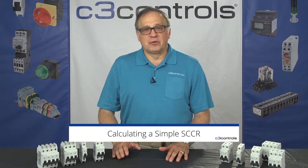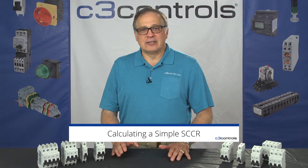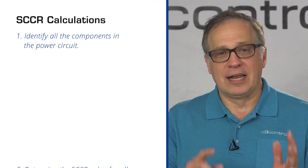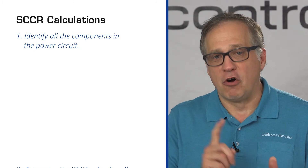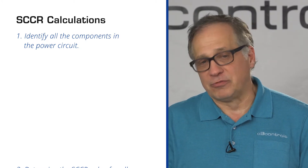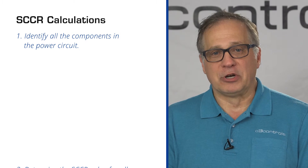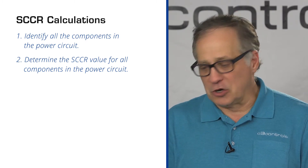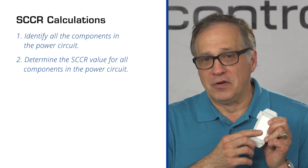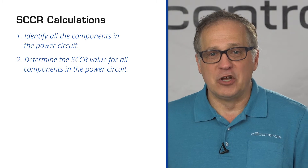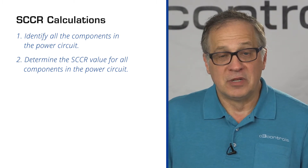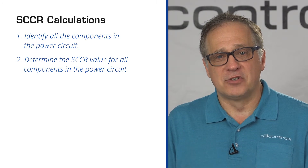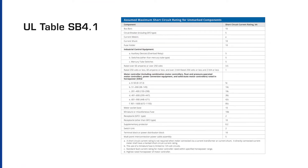Think of the control circuit as the brains and the power circuit as the brawn of a control panel. To calculate a simple short circuit current rating — and I say simple because SCCR calculations can get very complex — the first thing you do is identify all the components in the power circuit: disconnect switches, circuit breakers, fuse holders, overload relays, motor controllers meaning contactors, and terminal blocks or power distribution blocks. Determine the SCCR value for all the components in the power circuit. SCCR is usually marked on the component itself. Combination ratings are available on your website or within the manufacturer's instructions. If you cannot find the manufacturer's SCCR values, UL table SB4.1 lists the assumed maximum SCCR for unmarked components.